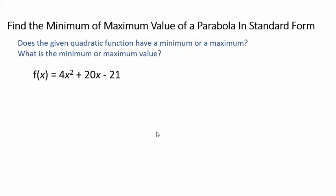In this video we're going to look at how to find the minimum or maximum value of a parabola when it's given to you in standard form. So here I have a quadratic function which we know is the graph of a parabola and the question is does this have a minimum or a maximum value and then what is the minimum or maximum value?